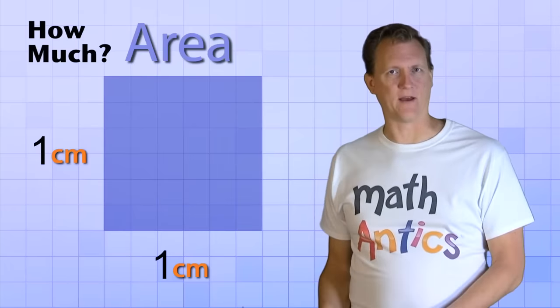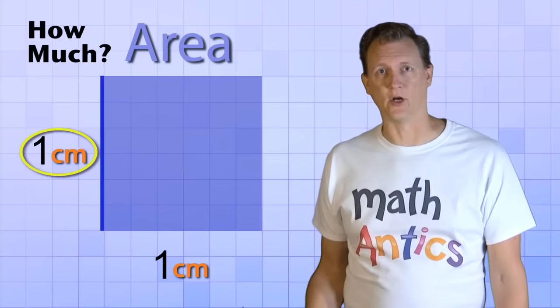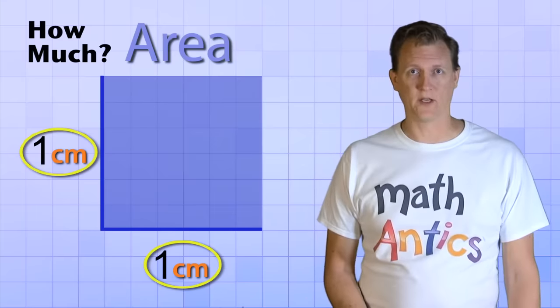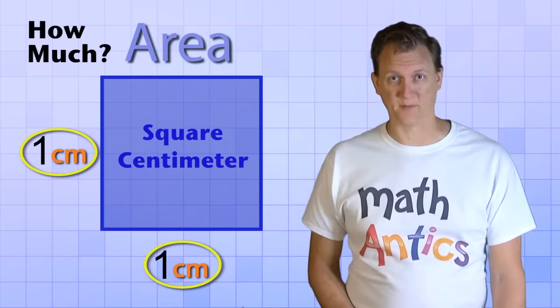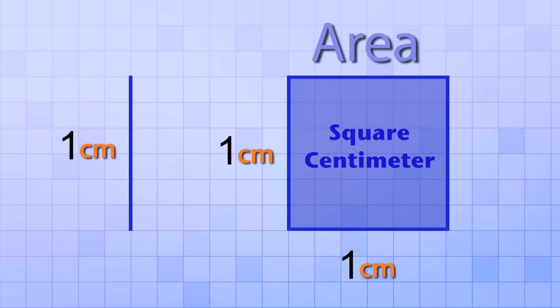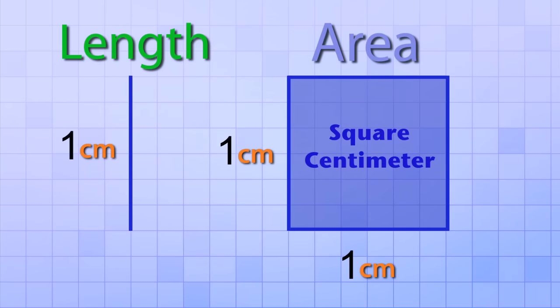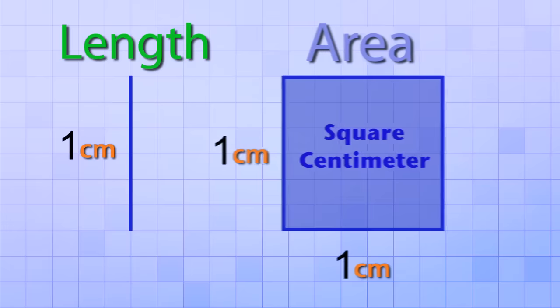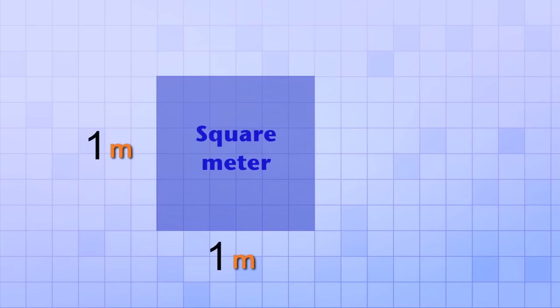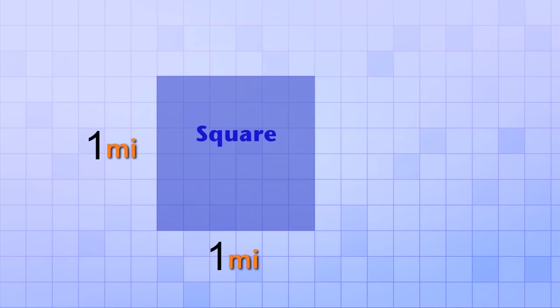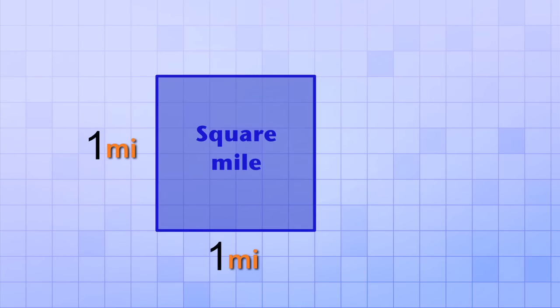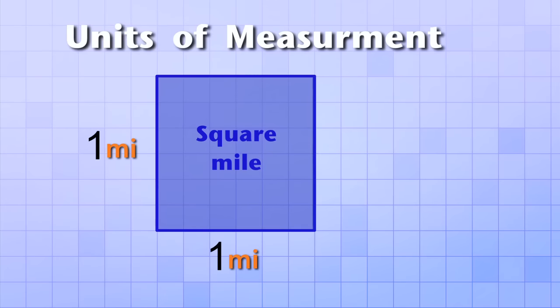How much area does this square have? Our original line was 1 cm long and we moved it a distance of 1 cm, so we could say that this shape is a square centimeter. Just like a centimeter is a basic unit for measuring length, a square centimeter is a basic unit for measuring area. There are other units for area too — if our line had been a meter long and we moved it 1 meter, we'd have 1 square meter. Or if our line was a mile long and we moved it a mile, we'd have a square mile. So just like with perimeter, the units of measurement are very important when talking about area.